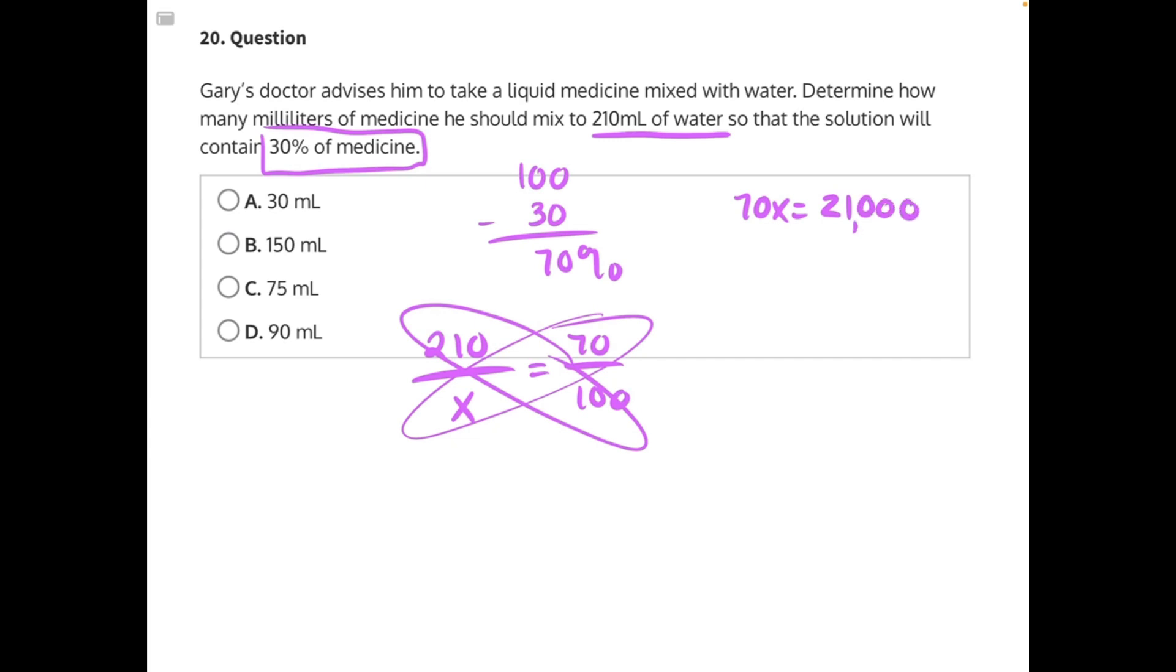Then 70 is being multiplied to x, so we need to do the opposite and divide both sides. These 70s cancel, leaving us with x equals. Cancel these zeros. 7 goes into 21 three times, add these two zeros, and you've got 300 milliliters of total solution.